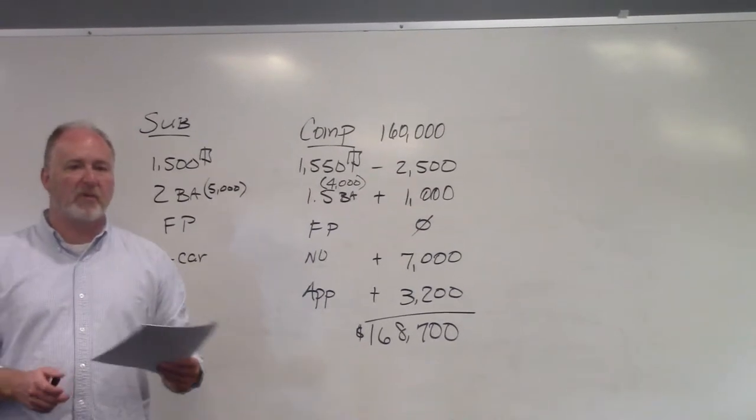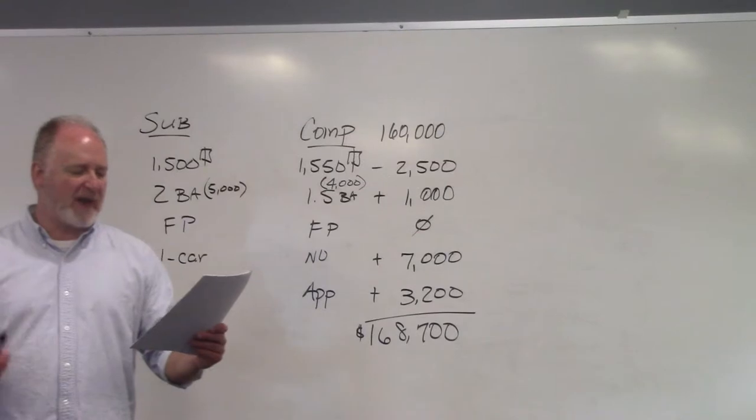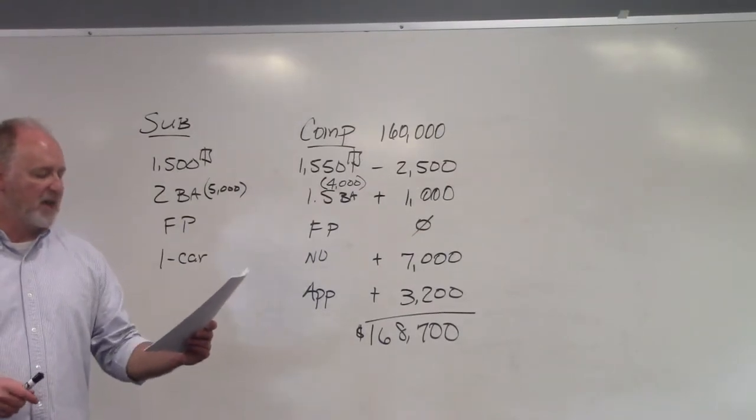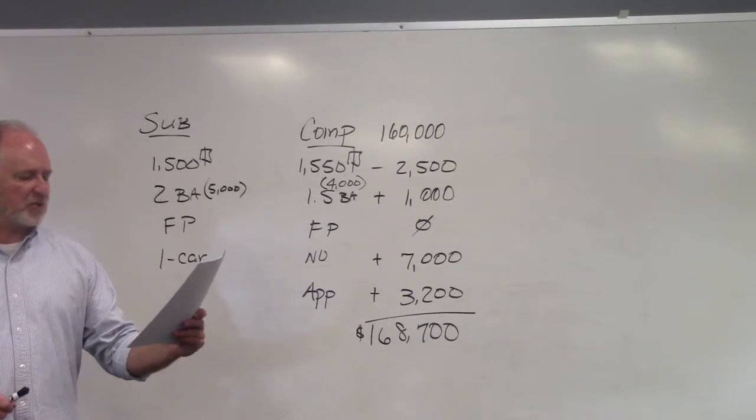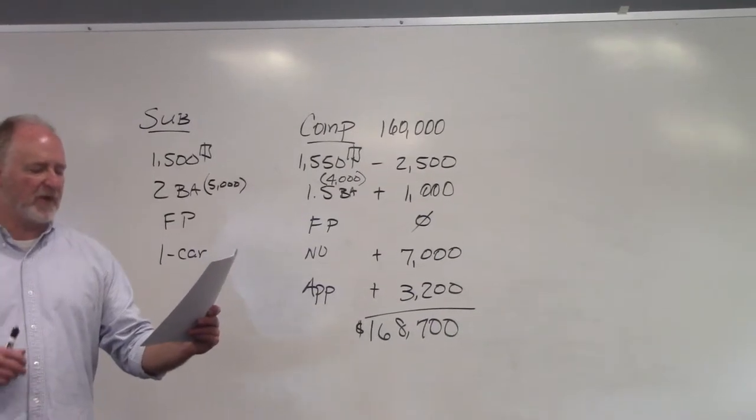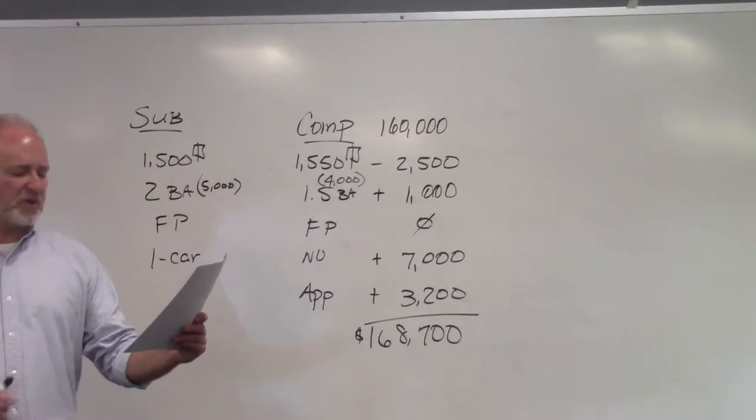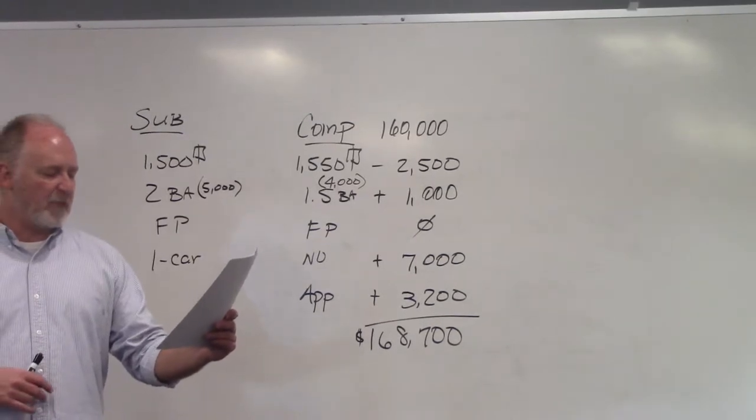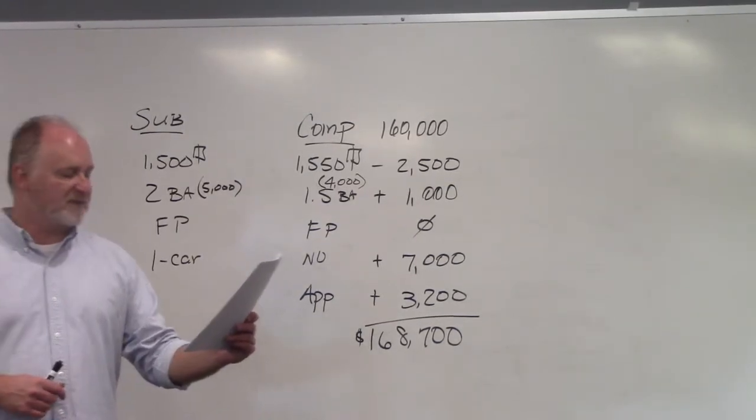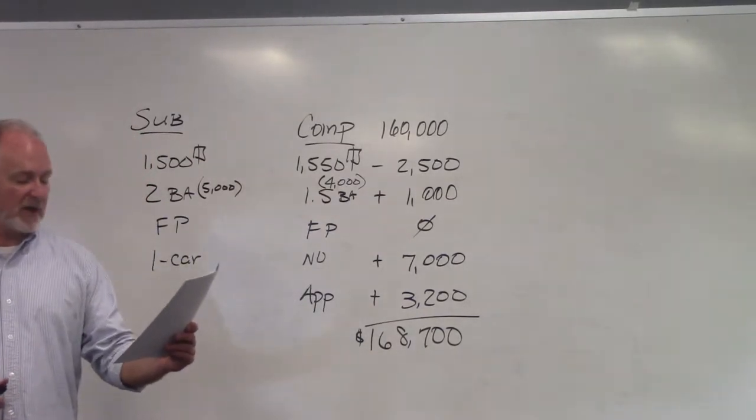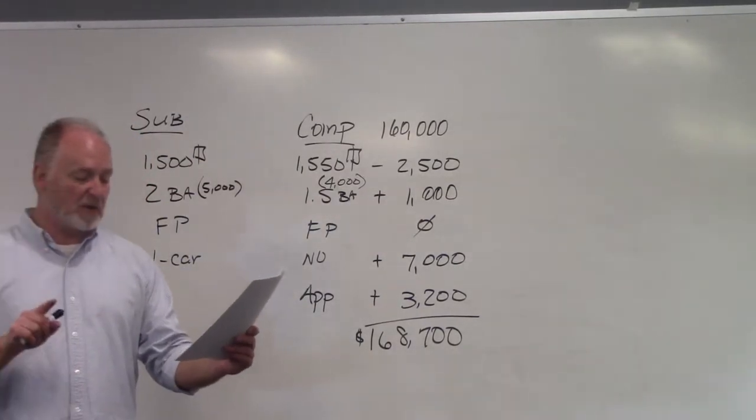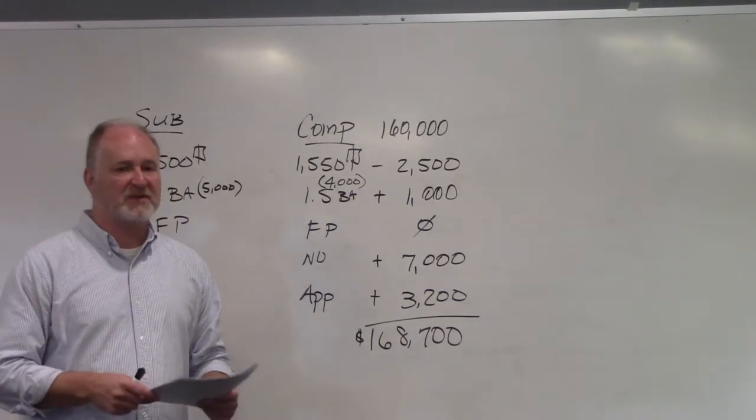An appraiser is valuating a subject property with 1,500 square feet, two baths, fireplace, a one-car garage, located at a comp that sold for $160,000. Student construction costs are $50 per square foot, value of a full bath $2,500, half bath $1,500, fireplace is $3,000, single garage is $7,000. Appraiser notes that properties in the area appreciated 2% since the day of the sale. What is the indicated value of the subject property?